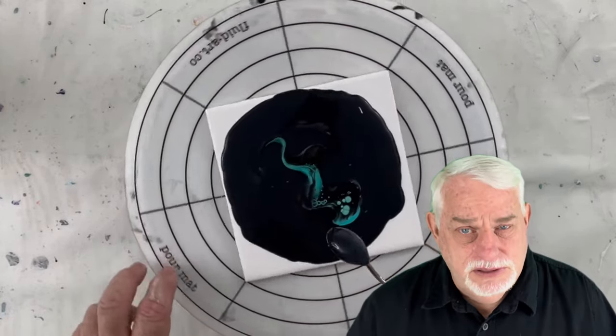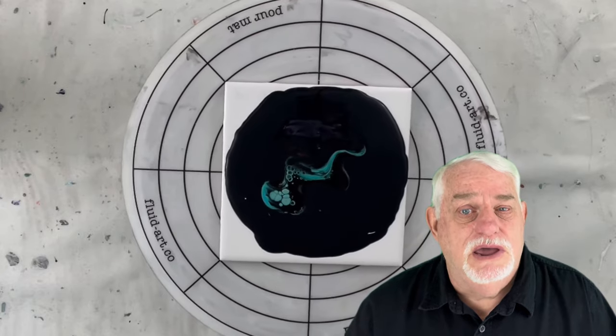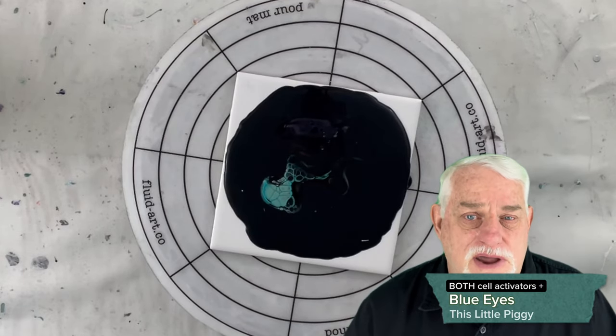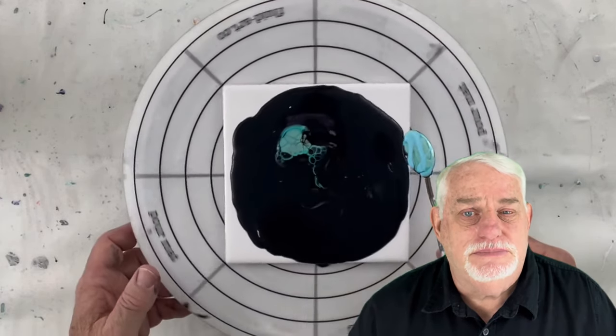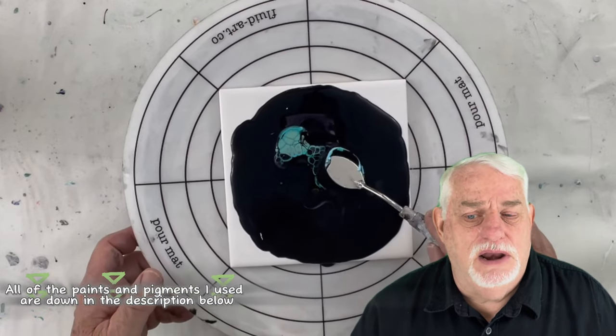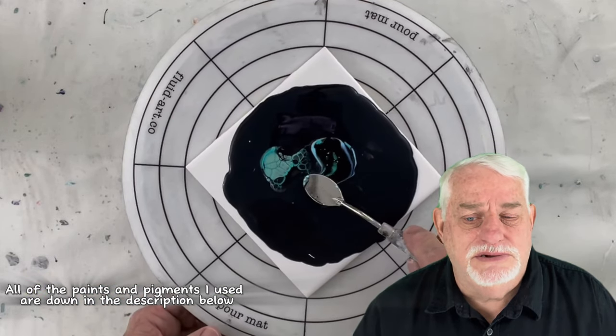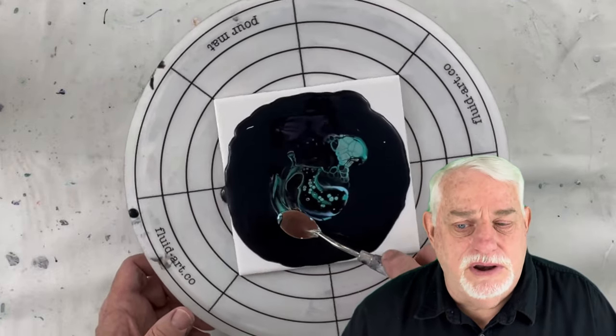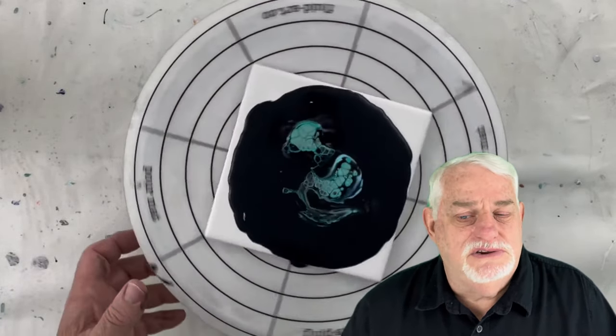I'm going to repeat this process with the same two cell activators with Blue Eyes added to the top of it. You're going to see I get a lot better cell activation, cell action going here, much faster.